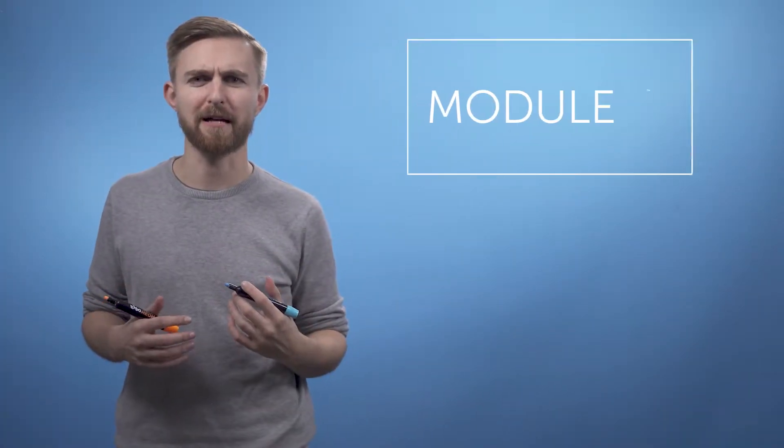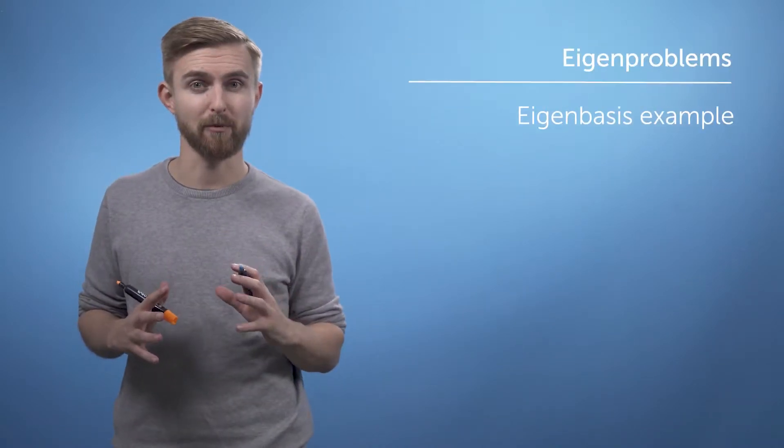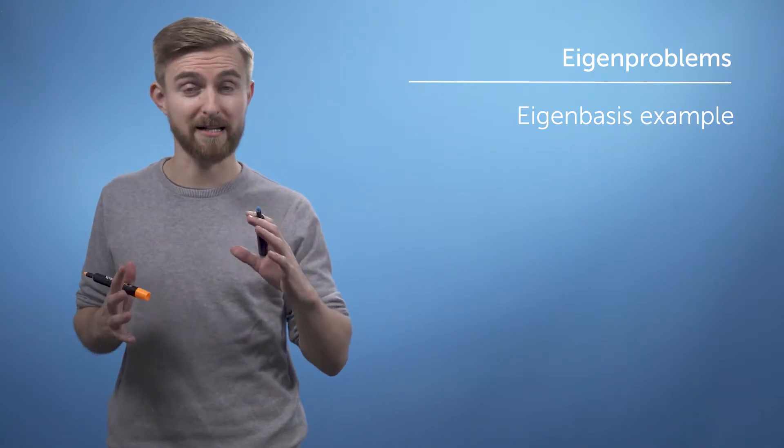Now that we've walked through the theory of eigenbases and diagonalization, let's have a go at a simple 2D example where we can see the answer graphically, so we'll know whether or not our method has worked as expected.